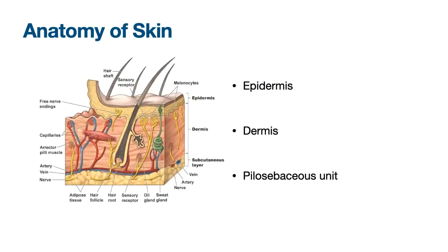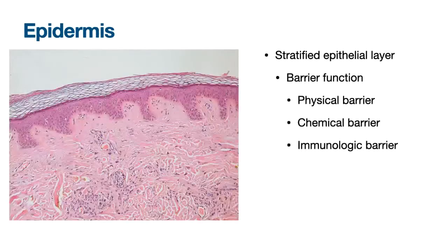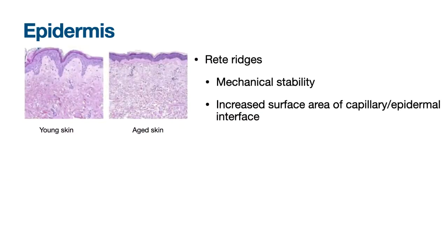The main function of skin is to protect the body from the environment, including from pathogens, and to maintain temperature and fluid homeostasis. There are two main overlapping layers to the skin: the epidermis and the dermis. There's also a pilosebaceous unit that consists of the hair follicle and its surrounding epithelium and associated sebaceous glands. The epidermis is a water-impermeable layer that consists primarily of keratinocytes.